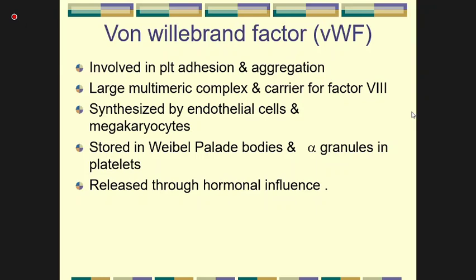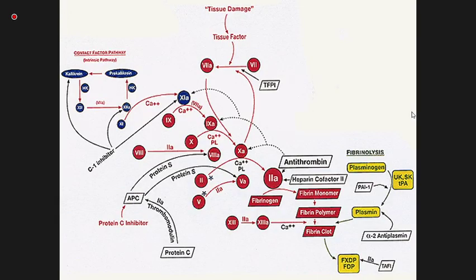This is an overview of the coagulation cascade. This particular diagram is preferred because it shows all the inhibitors together with the steps, the two pathways, fibrinolysis, and the inhibitors. You can use any coagulation cascade diagram that you feel comfortable with.